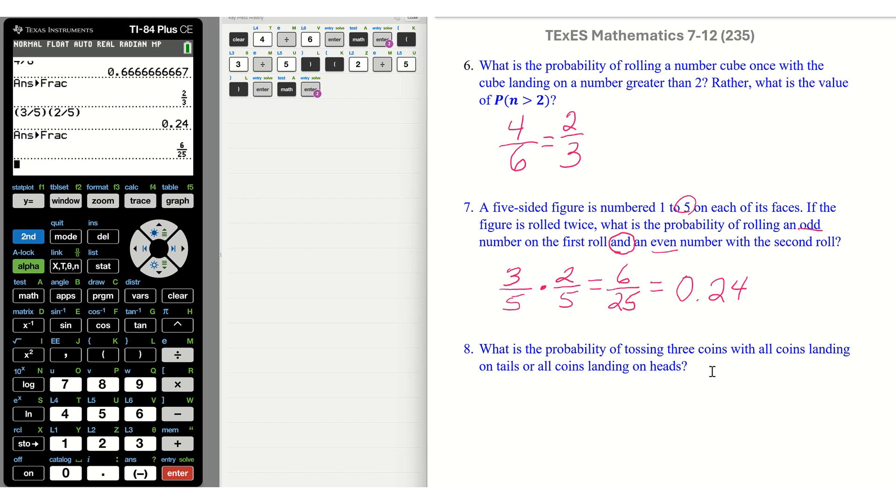Okay. Number eight, what is the probability of tossing three coins with all coins landing on tails, or all coins landing on heads? Now, that is going to be different from the other questions in the respect that we have or. So we have two, we really have two events. Every time we toss the three coins at once, that's one event. And the word or tells me we're going to add these events together.